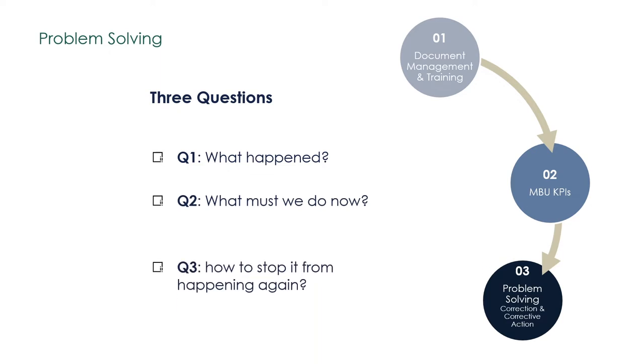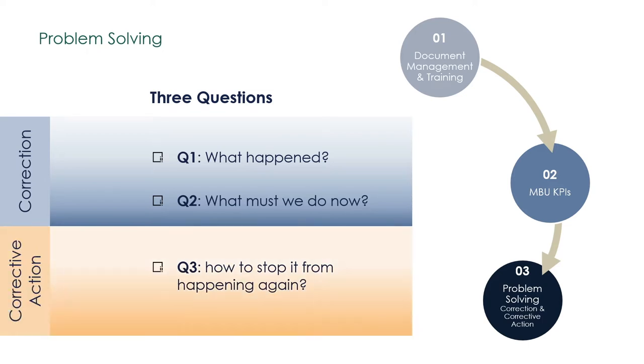How to stop it from happening again in the future? The first two questions look at correcting the problem. These are immediate contingency actions. The production line may be down or a customer needs to be serviced. The root cause is still there. The problem is likely to come back. By answering Question 3, we strive to find a root cause. A countermeasure may reduce the impact of the problem or even eliminate it. This is the corrective action.